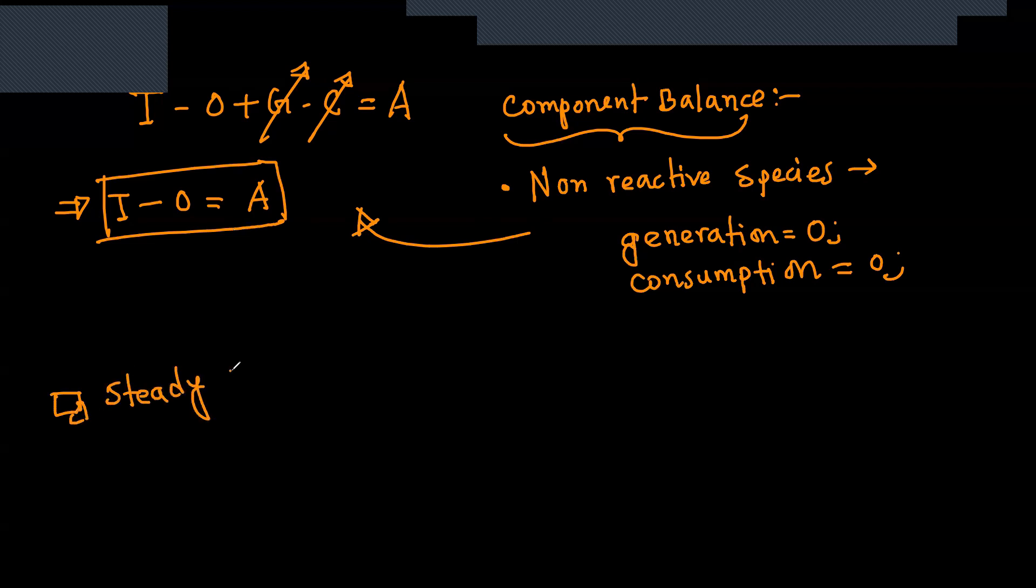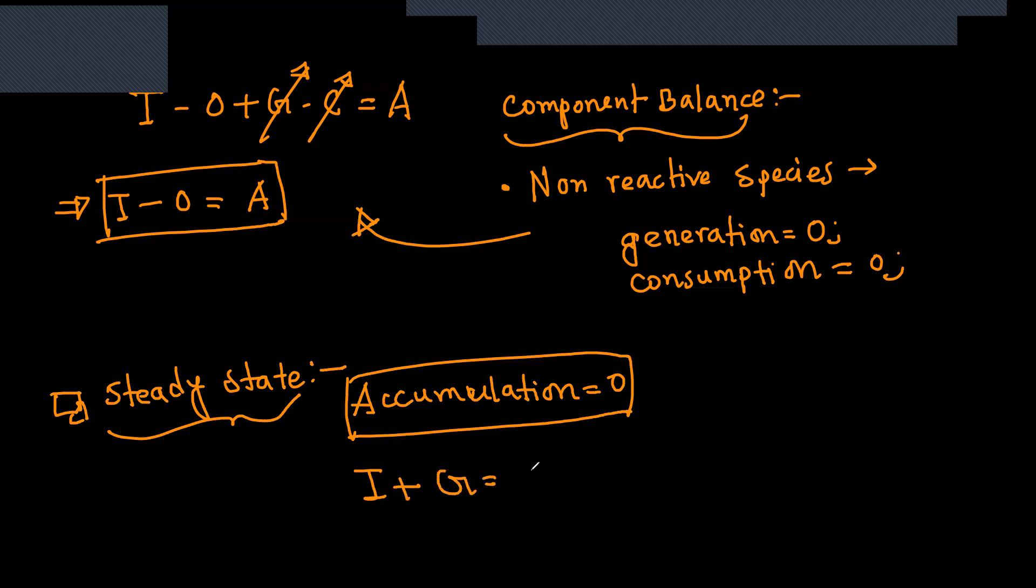For steady state with respect to time, the accumulation term would be zero. Then the general equation becomes input plus generation equals output plus consumption.